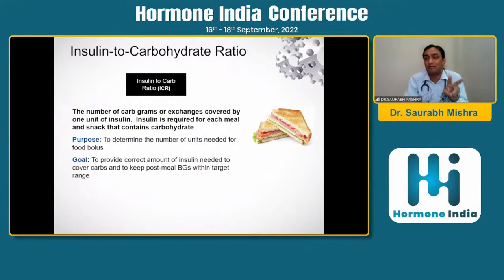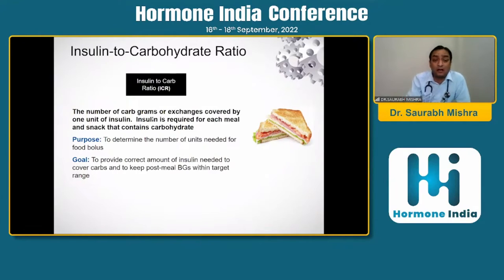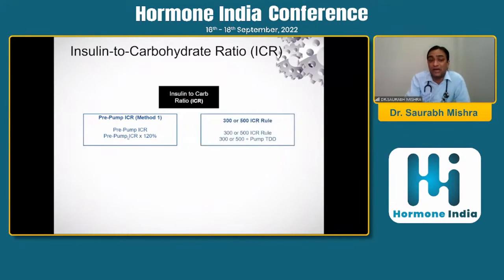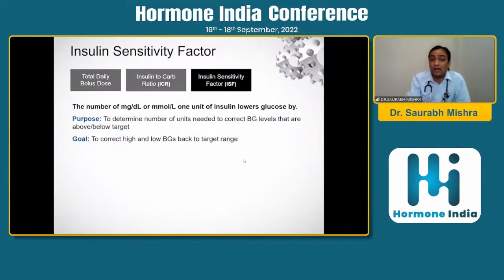The number of carbohydrate grams covered by one unit of insulin is known as the insulin-to-carb ratio. For pump settings, multiply your existing ICR by 1.2 — so if one unit manages 10g carbohydrate in MDI, when starting pump it becomes 12g. If you don't have a pre-calculated ICR from MDI, use the formula: 500 ÷ total pump daily dose to get the insulin-to-carbohydrate ratio.